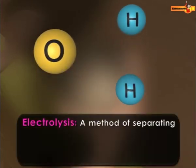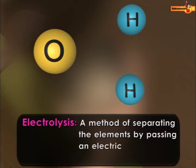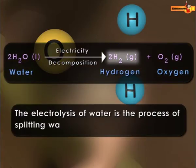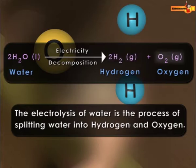Electrolysis refers to the usage of electricity for decomposing a substance. In the given chemical equation, water is breaking down into hydrogen gas and oxygen gas when electricity is passed through it.